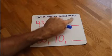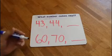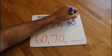What number comes next? 43, 44, 45. A 4 for the tens, a 5 for the ones, 45.